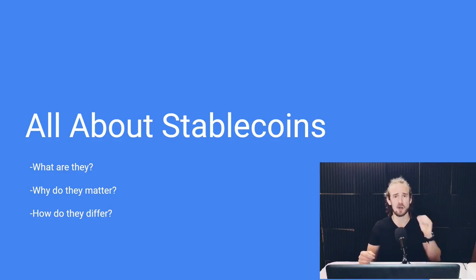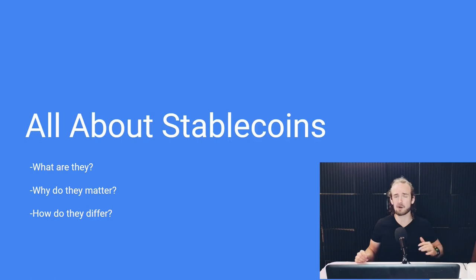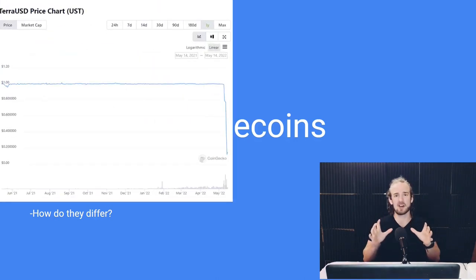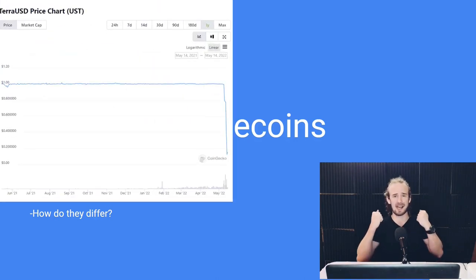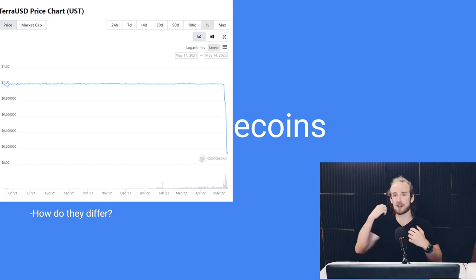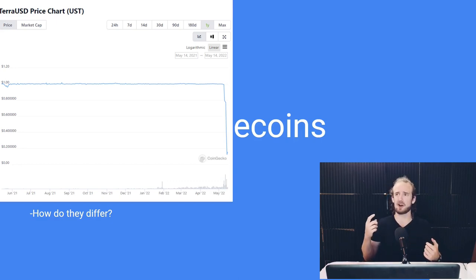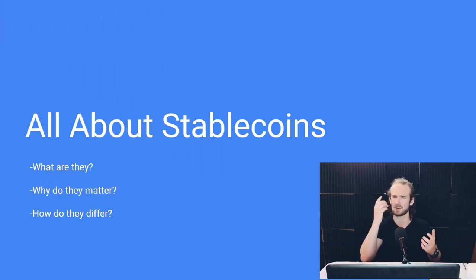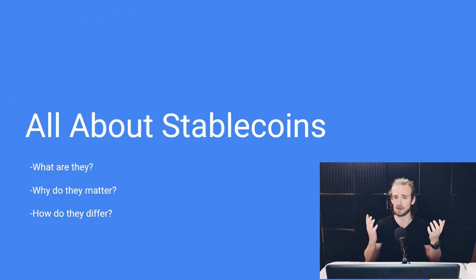In the space of just a few short days, life savings were completely wiped out as the Terra Luna ecosystem was absolutely annihilated. People lost millions, and others were sitting on the sidelines scratching their heads thinking: aren't stablecoins supposed to be stable?